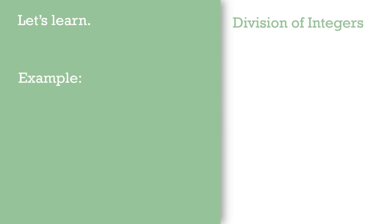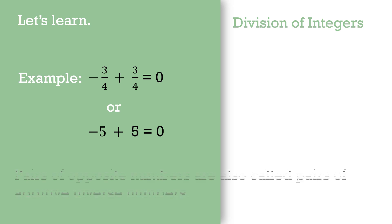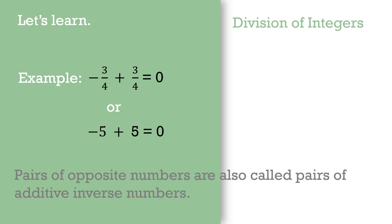For example, minus 3/4 and positive 3/4, or minus 5 and positive 5 — a positive and a negative of the same value give 0. When two numbers are the same but have different signs, they turn into 0. These pairs of opposite numbers are also called pairs of additive inverse numbers.